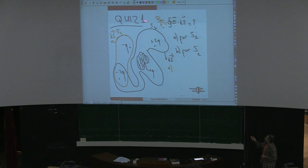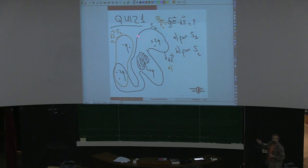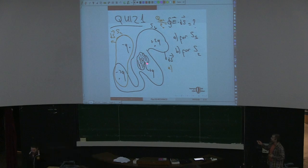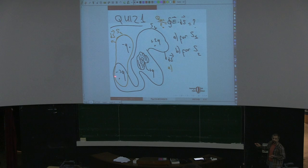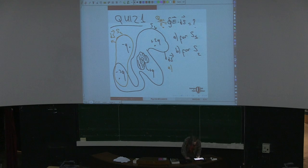Let's look at surface S1 — which charges are inside S1? This charge is +2q inside S1, this one is +q inside S1. The conductor is neutral, so that contributes 3q. This -3q is also inside the surface, so the total charge inside is zero. For part A, the answer is ∮E·dS = 0.